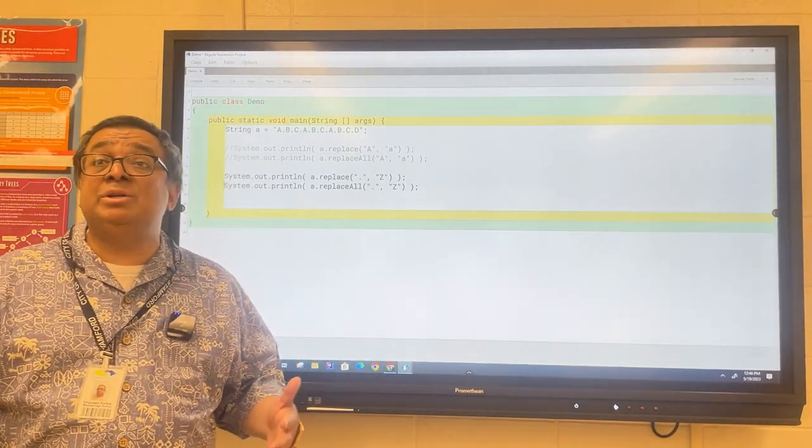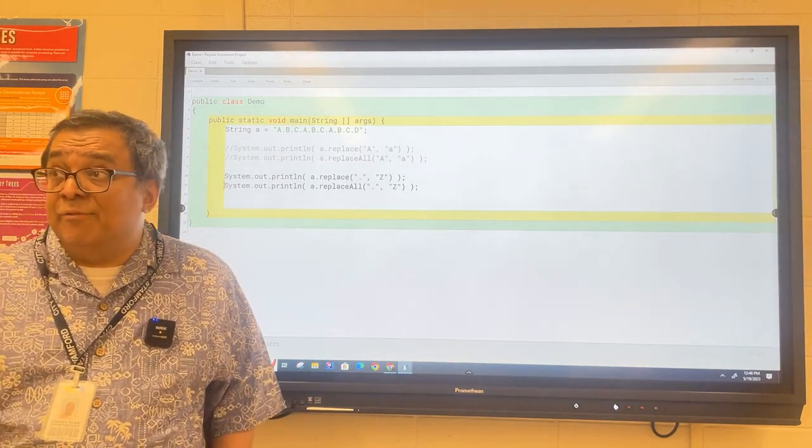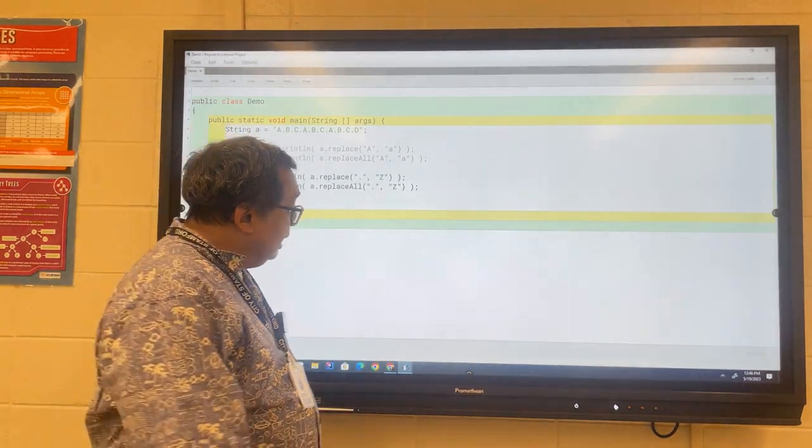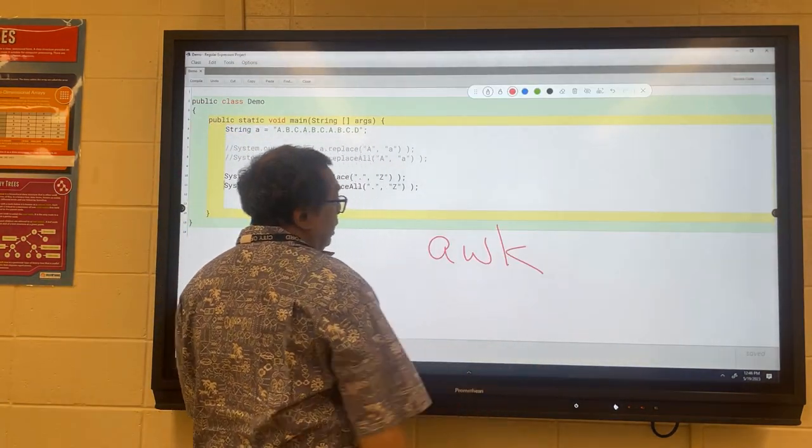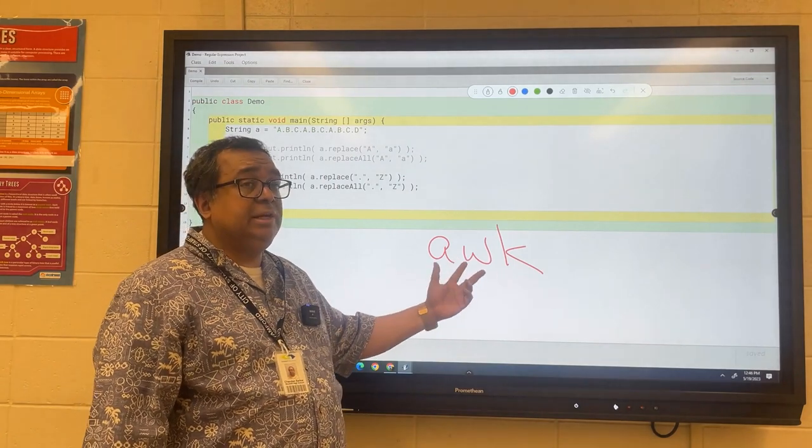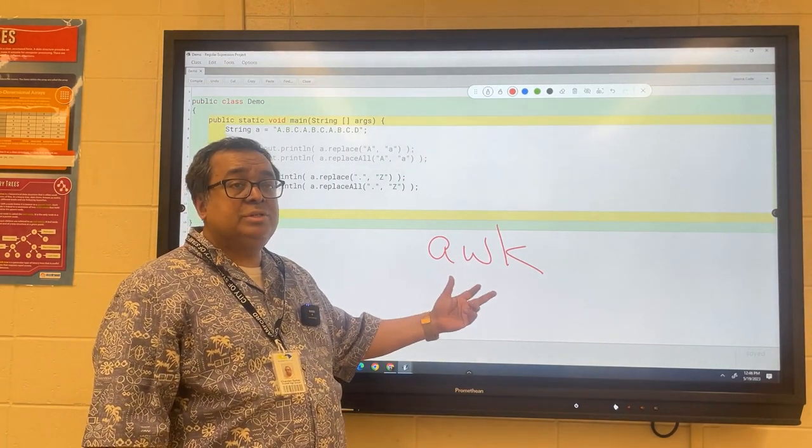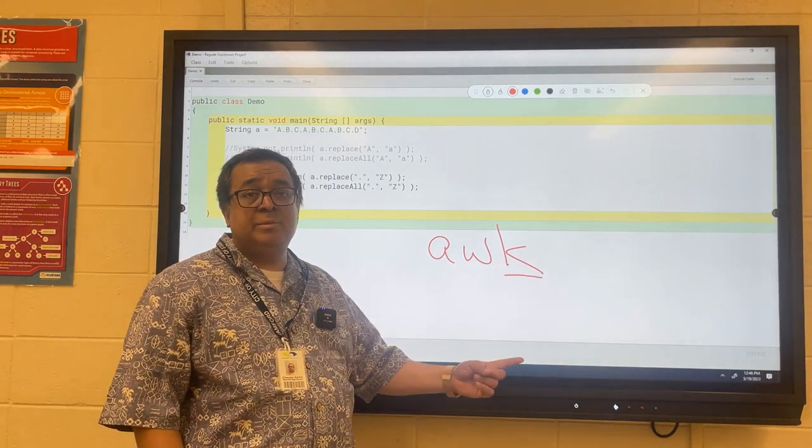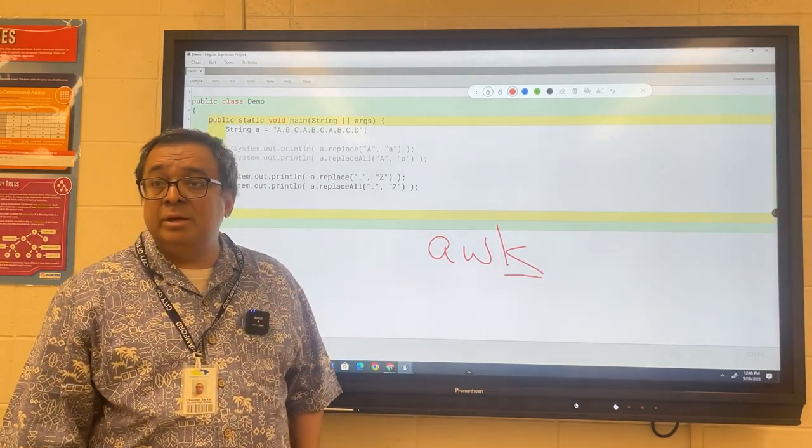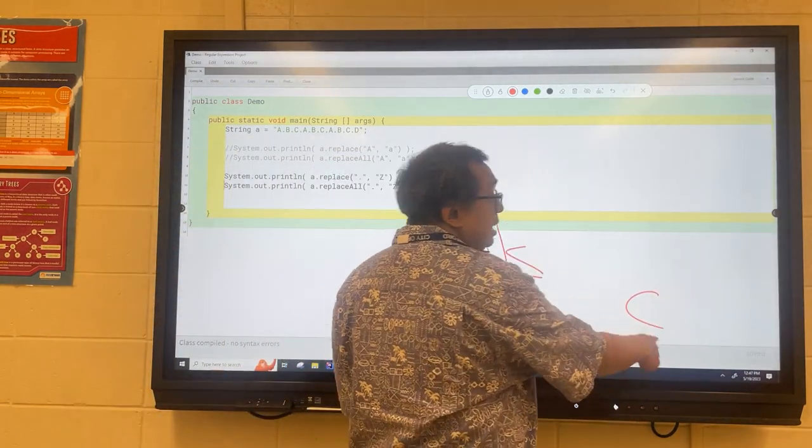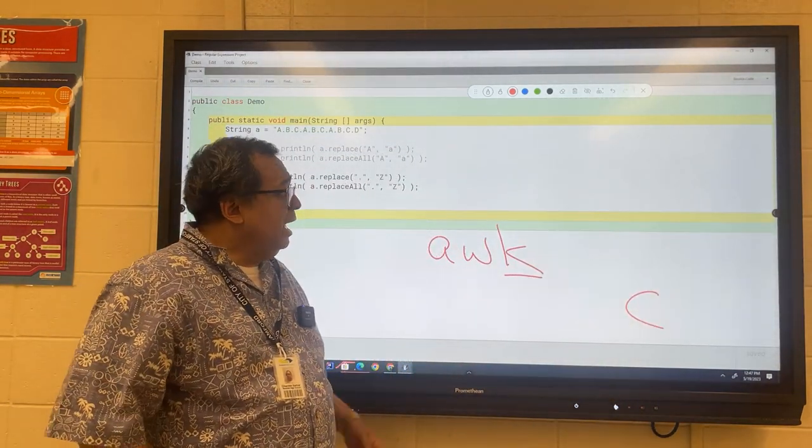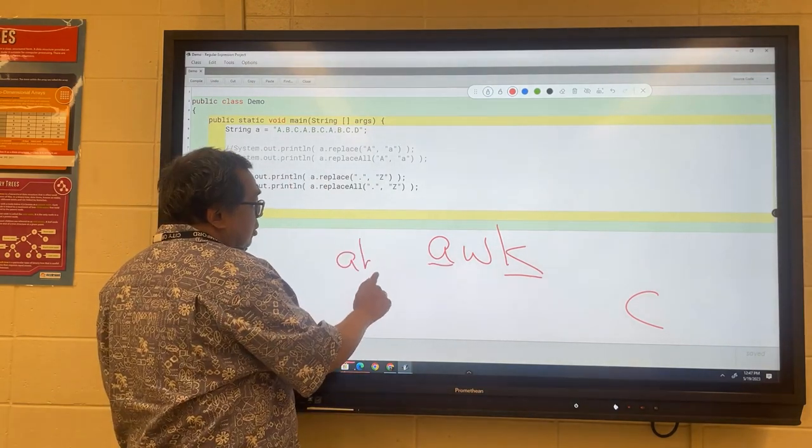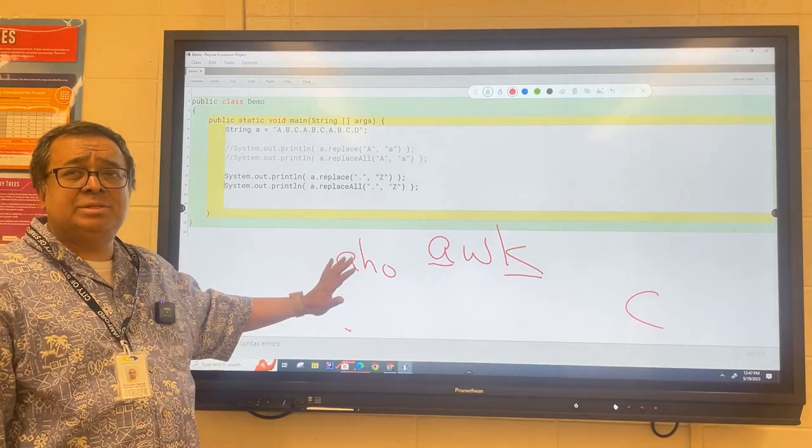It turns out there are also certain languages that are built for string manipulation. Like 40 years ago when I first started my job at the phone company, there was a language called AWK. These three letters stand for the computer scientists that invented the language. Kernighan is much more famous for another language that he created - anybody know what that language is? That was a language called C. Kernighan and Ritchie made C, and Aho is a really famous computer scientist in his own right.